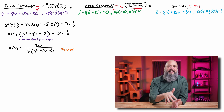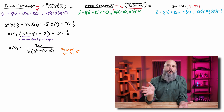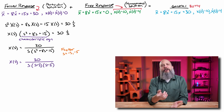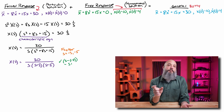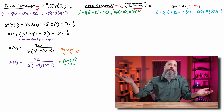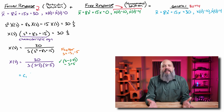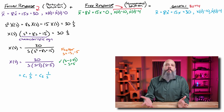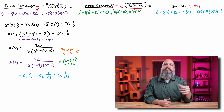We divide over to the other side: 30 divided by S times (S squared plus 8S plus 15). I can factor this. For homework problems, you can use the quadratic equation, but try integers first — it's usually going to be integers. Five plus three is eight, and five times three is 15, so S squared plus 8S plus 15 factors into (S plus 3)(S plus 5). That means the partial fraction decomposition is probably of the form C1 times one over S, C2 times one over S plus 3, and C3 times one over S plus 5.